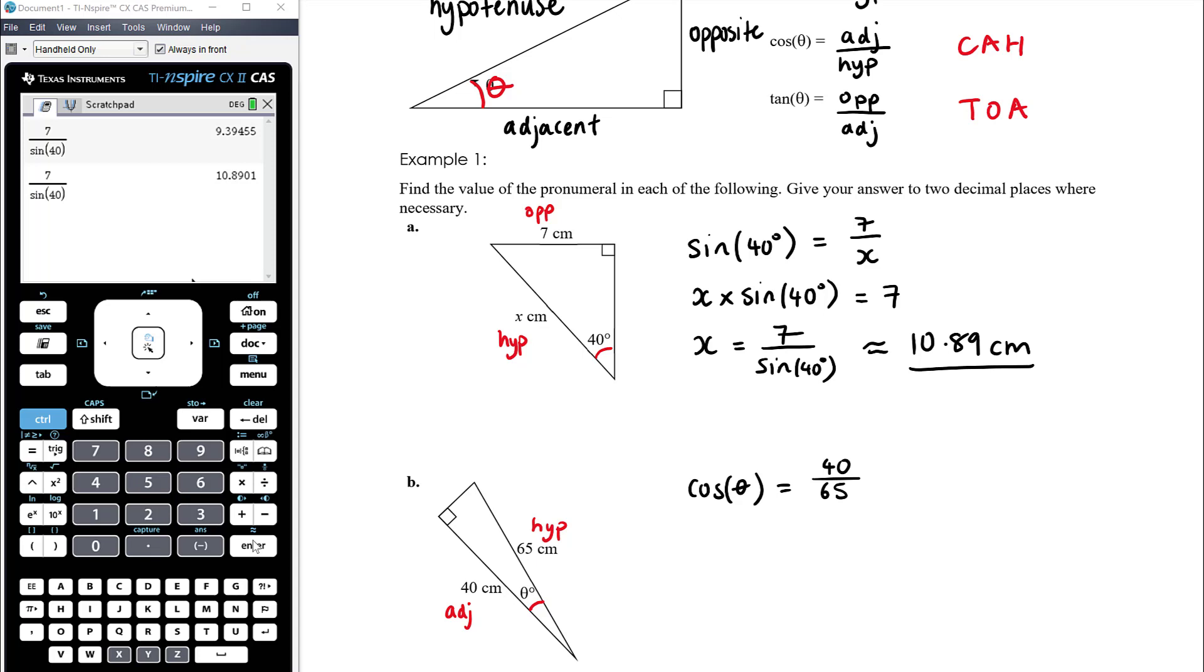So in this case, cos of theta is equal to the adjacent side, which is 40 over the hypotenuse, which is 65. And you can simplify that if you want, but it doesn't really matter. It's not the final answer. So now we need to solve for theta in the same way that up in part a, we substitute the information into the trig ratio, and then we solve for the unknown. Here, same thing. We need to now solve for theta.